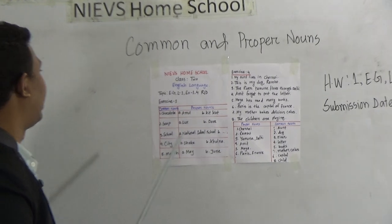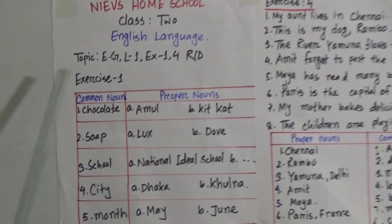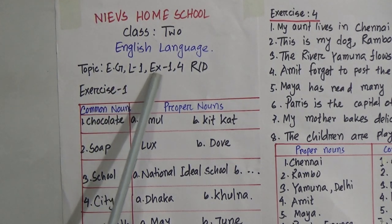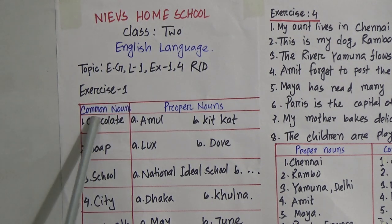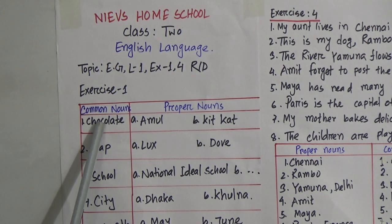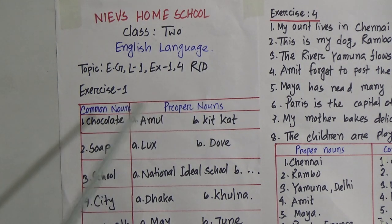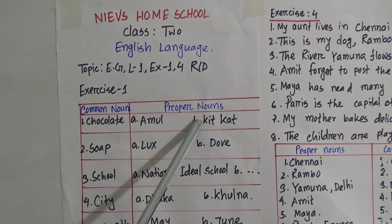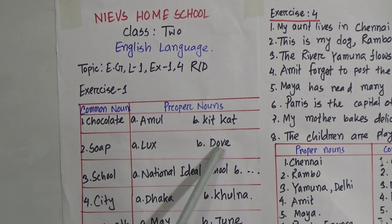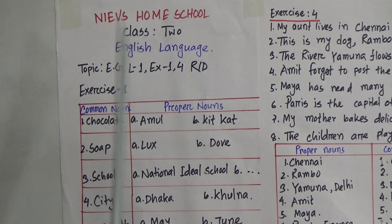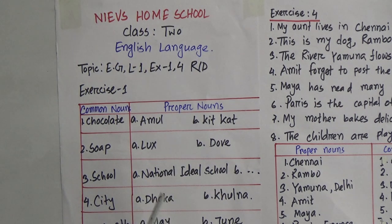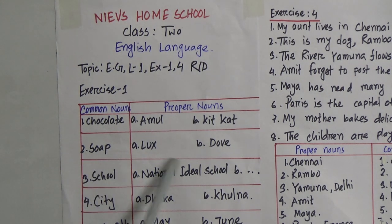Now we will come to our examples. It's from your Enjoying Grammar book, page number 2 — Enjoying Grammar, Lesson 1, Exercise 1. These are common nouns, and these are proper nouns. In common: chocolate — it's common, so we have to write some special names of this chocolate. So, Amul and Kit Kat. You may write any chocolate you like. Then soap — it's Lux and Dove. Soap is common, but Lux and Dove — or other soap names, it may be Lifebuoy or Sandalina — that's a special name, so that's our proper noun.